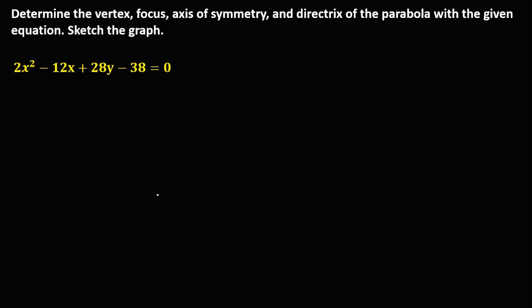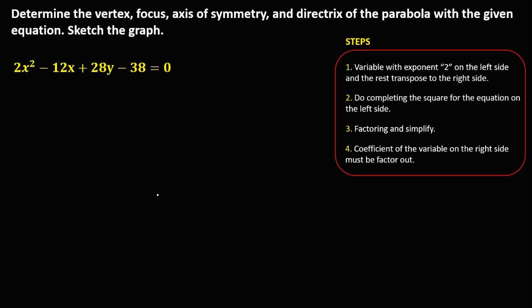We have the given equation. Since every term is divisible by 2, we need to reduce this equation first by dividing every term by 2. So we have: 2 divided by 2 is 1, giving x squared; minus 12 divided by 2 is 6, so minus 6x; plus 28 divided by 2 is 14; minus 38 divided by 2 is 19; equals 0.